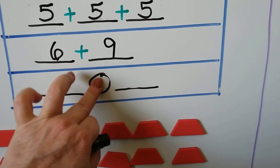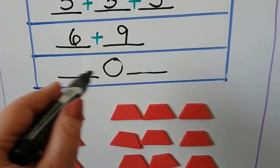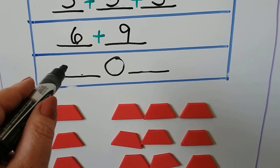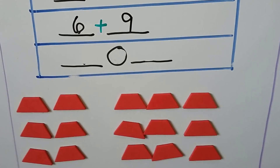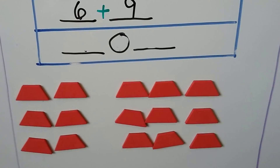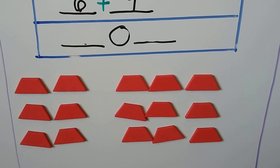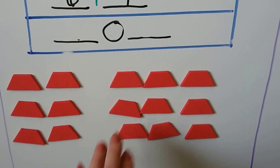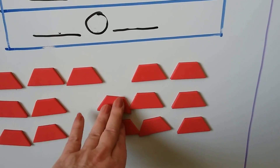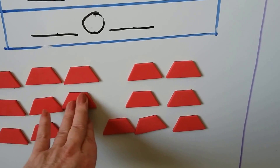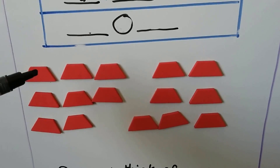And if we have to think of our own addition or subtraction sentence, we can put either one in here. We can come up with a way to make 15.